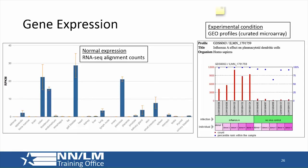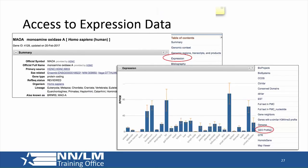Another type of expression data comes from microarrays, present in a database linked to Gene called GEO Profiles. For example, this shows a cell line exposed to influenza A — whatever this gene is, it has increased expression in samples exposed to influenza versus those not exposed. You can access expression data directly in the gene record from the table of contents, and use the related data portlet to go into GEO Profiles to look at profiles across different samples for a microarray experiment.